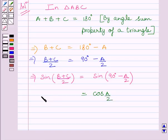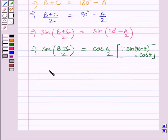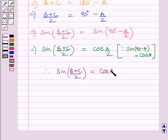So we get sin of B plus C upon 2 is equal to cos A upon 2. So our required answer is sin of B plus C upon 2 is equal to cos A upon 2. Hence proved.